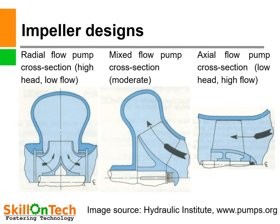Three pictures of three different kinds of impellers are shown. The first is a radial flow impeller, the second is a mixed flow impeller, and the third is an axial flow impeller. The radial flow impeller gives discharge perpendicular to the shaft, the mixed flow gives it diagonally at 45 degrees to the shaft, and the axial flow gives it axially. Radial flow impellers are used for high head and low flow; mixed flow for moderate flow and head; axial flow for low head and high flow.